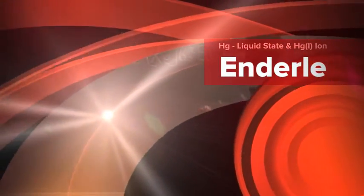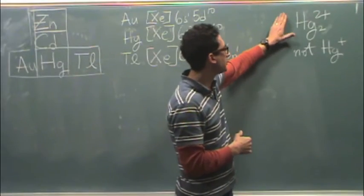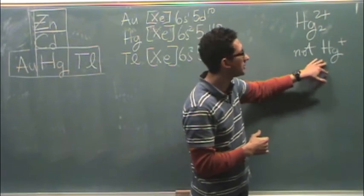This video is tackling mercury, and I often get the question of the mercury one ion. Why is the mercury one ion a dimer? That is Hg2²⁺, and not Hg⁺.